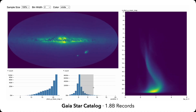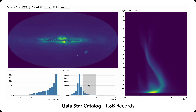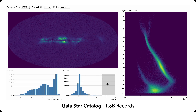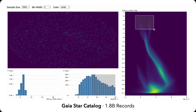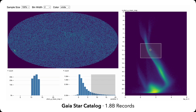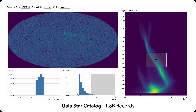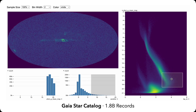Here we use Mosaic to explore 1.8 billion stars in the Gaia Catalog. Selecting higher parallax stars reveals the main sequence of stellar lifespans in the plot of color versus brightness on the right. We can trace this sequence to see how the stars distribute in the sky map on the left. The distribution appears relatively uniform until we brush down to the brightest stars.